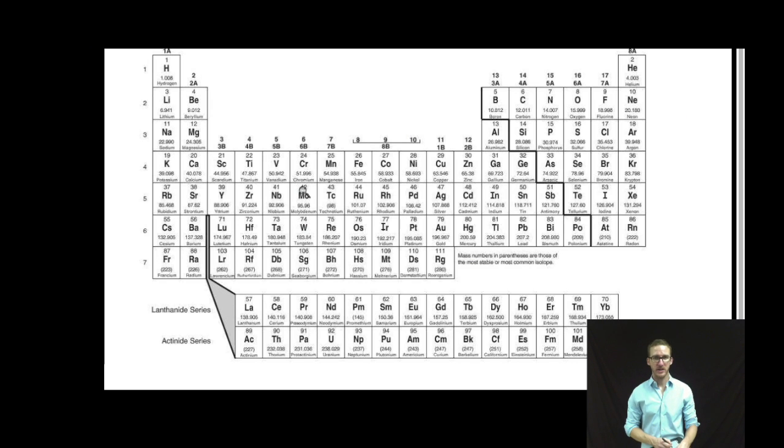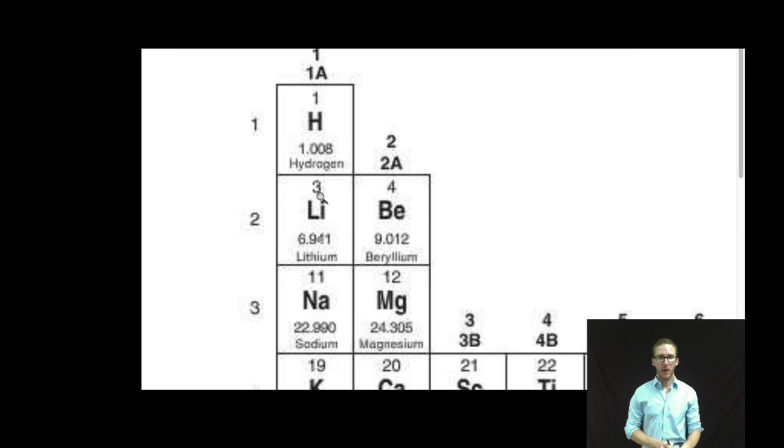The next element you're asked to build an electron configuration for is lithium. I scope out my periodic table. It has an atomic number of three, so neutral atoms of lithium will have three electrons. How are they arranged in the electron cloud? That is the question, and its electron configuration is the answer.